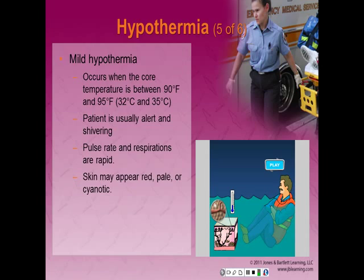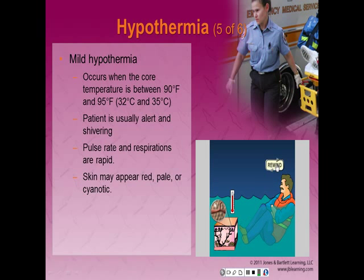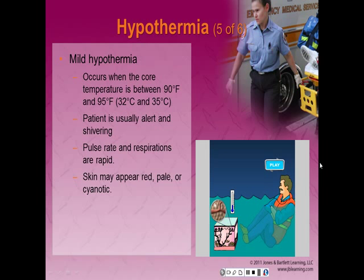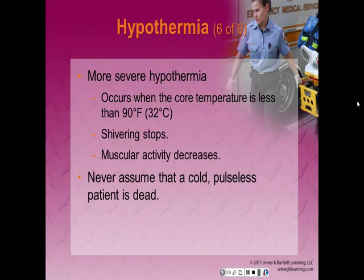Mild hypothermia occurs when the core temperature is between 90 and 95 degrees. The patient is usually alert and shivering, heart rate and respirations are usually rapid, and the skin may appear red, pale, or cyanotic. In the animation, this patient is in the water — as his body temperature starts falling, he starts shivering, which is the normal response. More severe hypothermia occurs when the core temperature is less than 90 degrees Fahrenheit, at which time shivering will stop and muscular activity decreases.